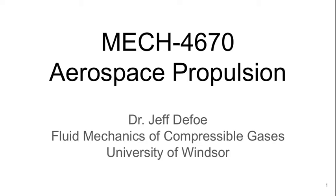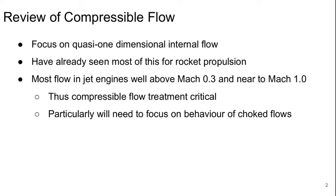Welcome to lecture 12 of Aerospace Propulsion. Today's lecture, we're going to cover chapter 6 of Kumske and Hayes textbook. This is essentially a review of basic compressible flow. We're going to focus on quasi one-dimensional internal flows. We've mostly seen this stuff when we were talking about rocket propulsion earlier, but we're going to look at some things a little bit different way here than we thought about them before.